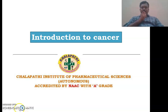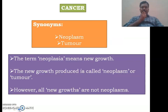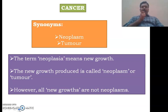The first thing we are going to discuss is regarding its synonyms. Cancer is also known as neoplasm and it can also be called a tumor. The term neoplasm or neoplasia means new growth, but all new growths are not cancers. New growth produced is called neoplasm, which is also known as tumor, but all new growths are not neoplasms.